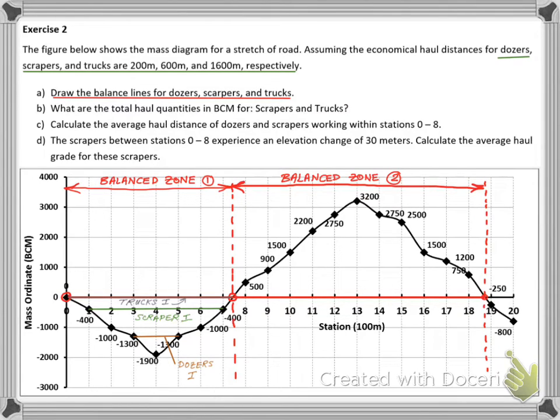Although the trucks can economically haul up to 1,600 meters, the remaining part of zone 1 will only require them to haul the soil for around 730 meters.